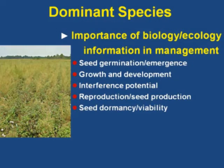Today I want to talk about a dominant weed and the importance of weed biology, and how we can use that information to manage that weed problem. I'm going to look at five different areas: seed germination and emergence, growth and development, interference potential, reproduction and seed production, and finally seed dormancy and viability.